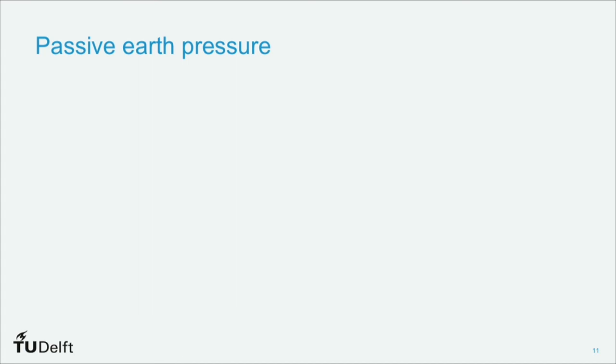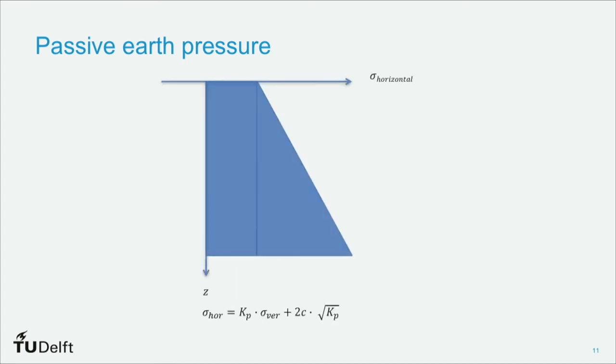If we look at this over the depth of the soil, so over the soil profile, we have an axis here of depth on the y-axis and horizontal stress on the x-axis. We see that we initially have some horizontal stress at the surface, which is due to the cohesion component of the equation, the second component. And this increases over the depth due to the first term, and that's Kp times the vertical stress.